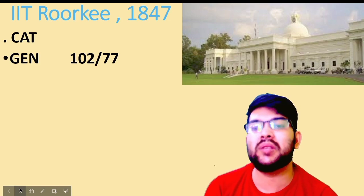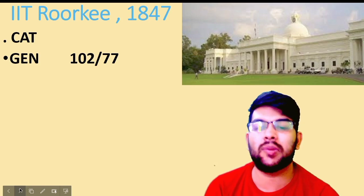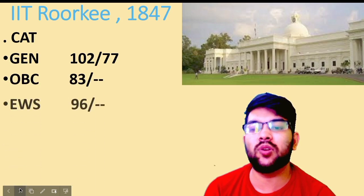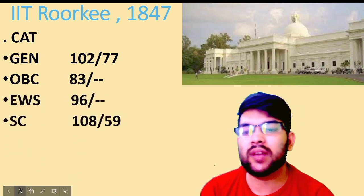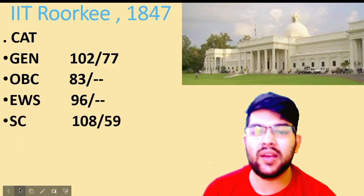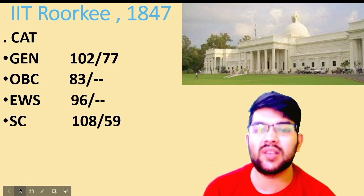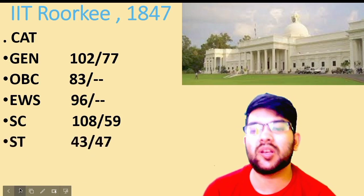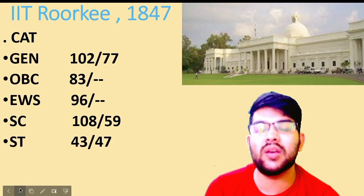For female it is 77 marks, because there is a separate female reservation available. For OBC, 83 marks; for EWS, 96 marks; for SC it is 68 marks and 59 marks for female. For ST, it is 43 and 47 marks. So this was about IIT Roorkee.